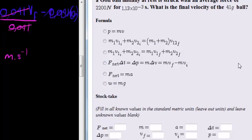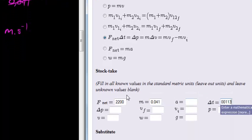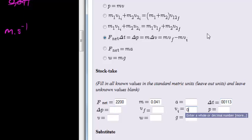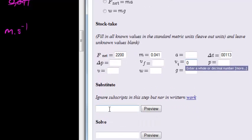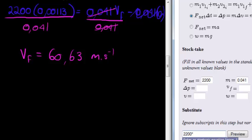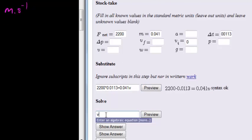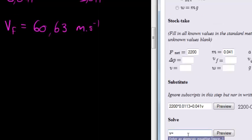Let's quickly fill that out. We know that this was the formula that we used. We know that our net force was 2200. Our mass was 0.041. And time was 0.00113. Then substituting, we got 2200 times 0.0113 is equal to future velocity. But that was first multiplied with 0.041 times V. Preview, looks good. And our final answer, V is equal to 60.63 meters per second. That looks absolutely perfect. Well done.